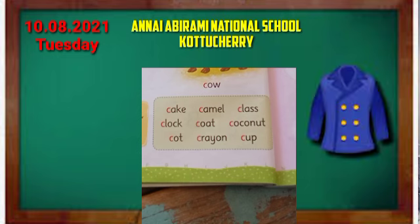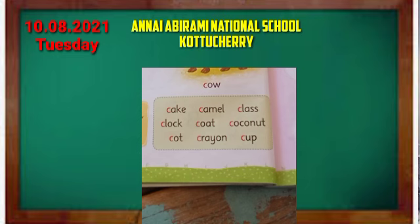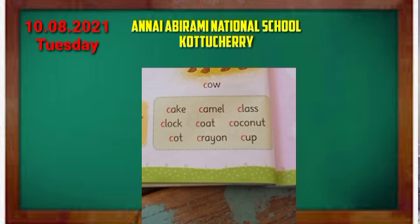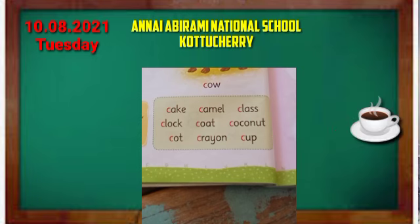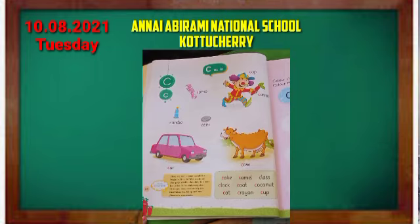C-O-A-T. Coat. Coconut. C-O-C-O-N-U-T. Coconut. Cot. C-O-T. Crayon. C-R-A-Y-O-N. Cup. C-U-P. Children, do you understand these C words? Good. One time you read these words.